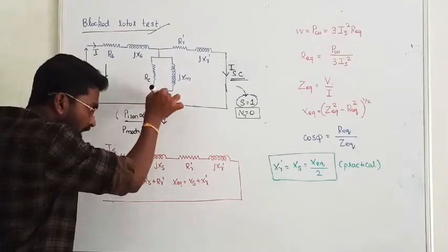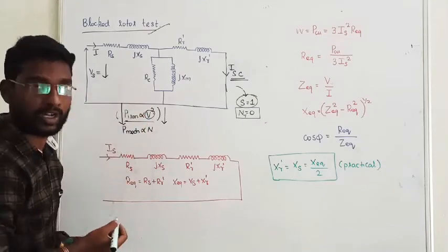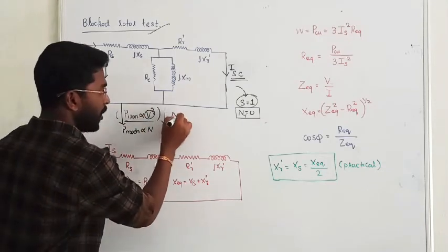Core loss component, that is iron loss, is directly proportional to voltage squared. On short circuit test, we are reducing the amount of voltage. The core loss components, since voltage is reduced, iron loss will be reduced, that is core loss will be negligible, you can neglect it.